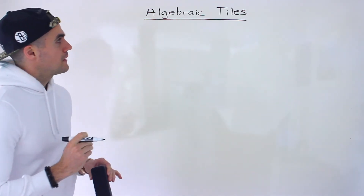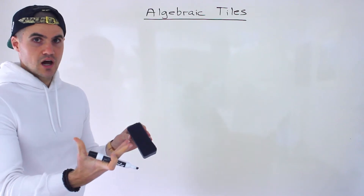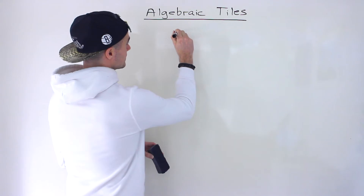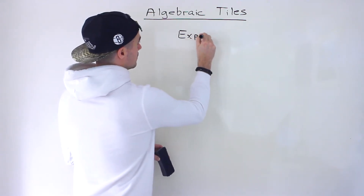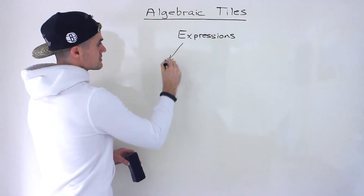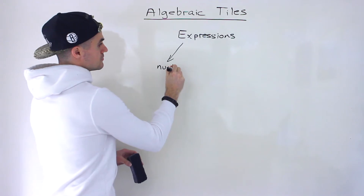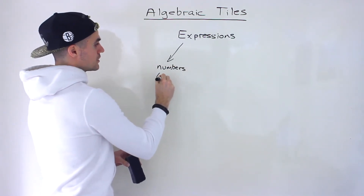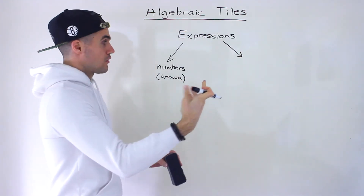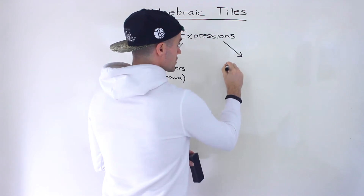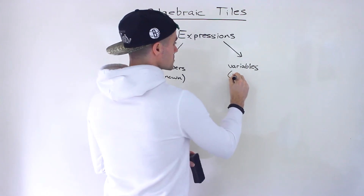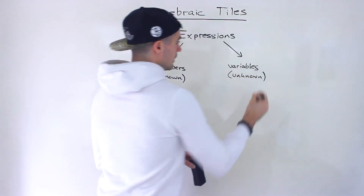Now algebraic tiles are basically visual representations of mathematical expressions. A mathematical expression is usually going to be a combination of two things: there's going to be numbers — those are the known quantities — and then there's also going to be unknown things, and those are going to be represented with variables, which are unknown.